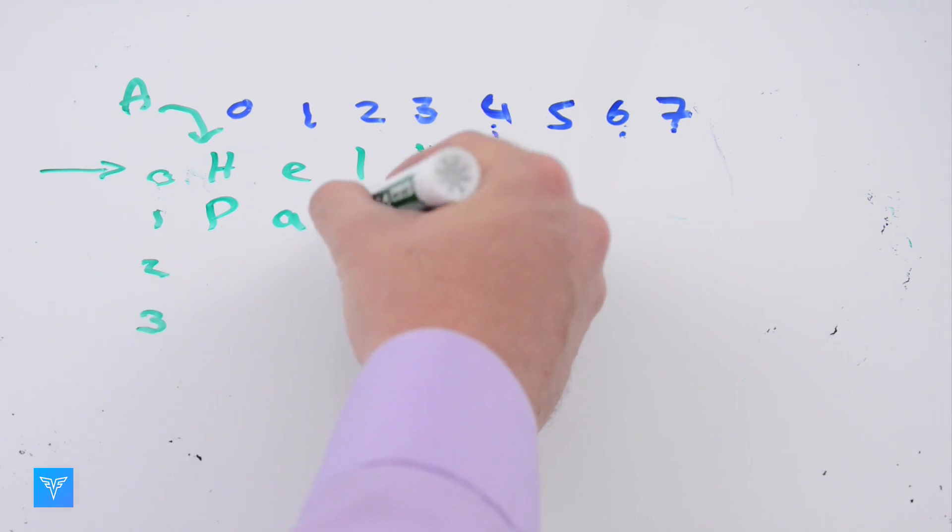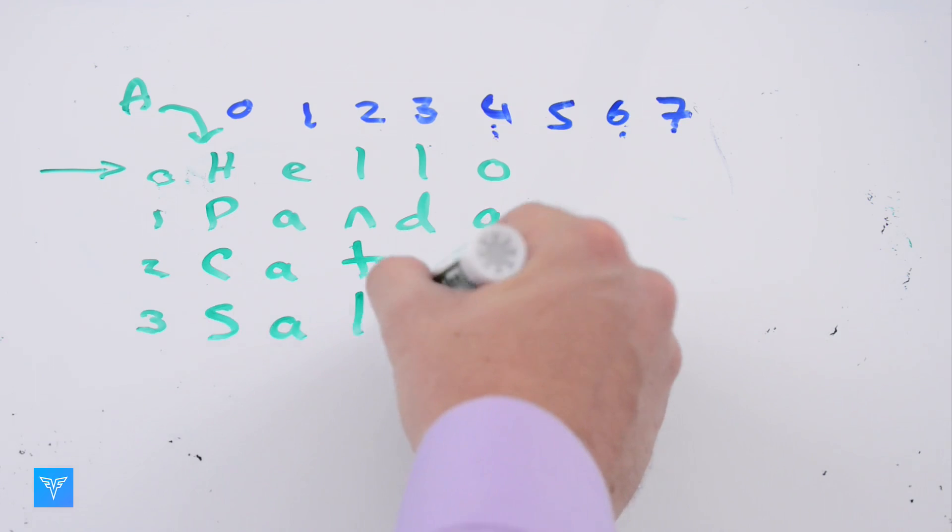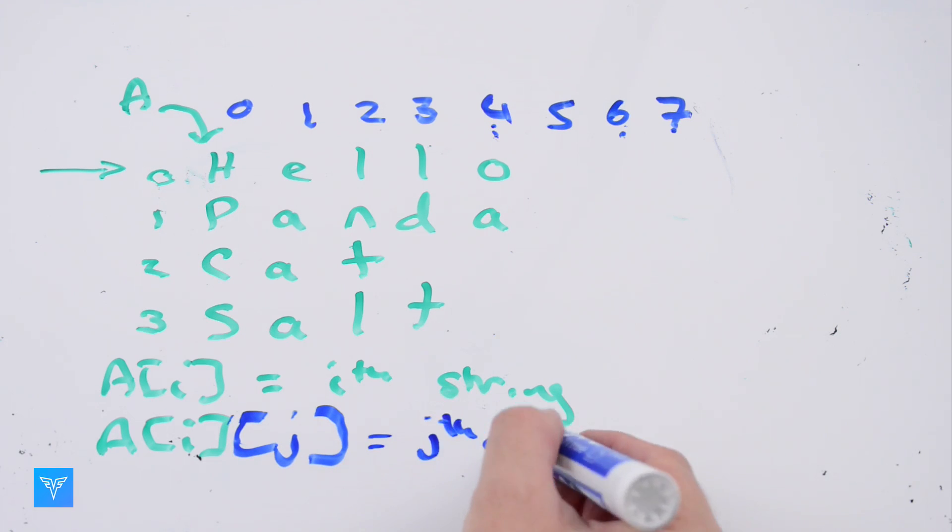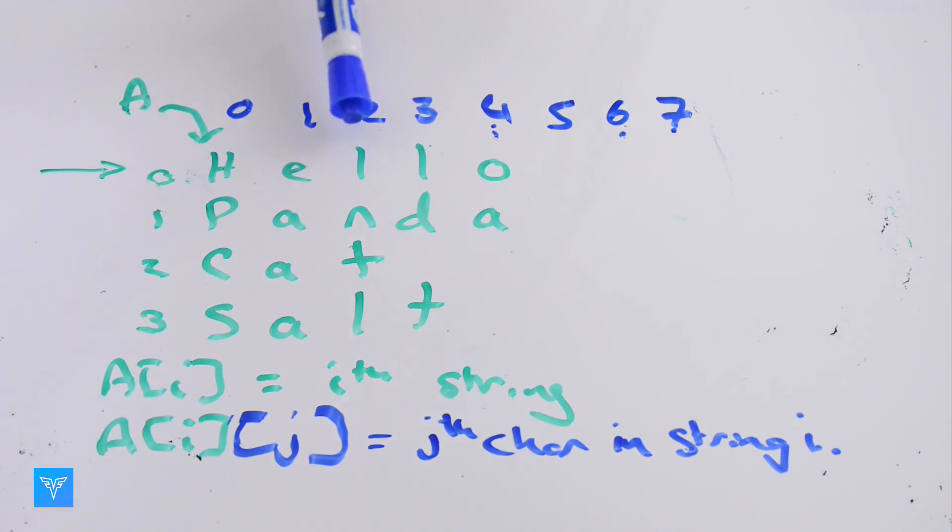In some cases, it will make sense to have a variable number of indices per element. For example, if this were an array of strings, A[i] is the ith string, and A[i][j] is the jth character in the ith string. Because each string can have a different length, we don't force each A[i] to be the same length.